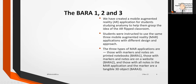The three types of mobile augmented reality applications are: BARA1, where markers and nodes are on printed notebooks; BARA2, where markers and nodes are on a website; and BARA3, where all nodes are in the mobile augmented reality application and the marker is on a tangible 3D object.